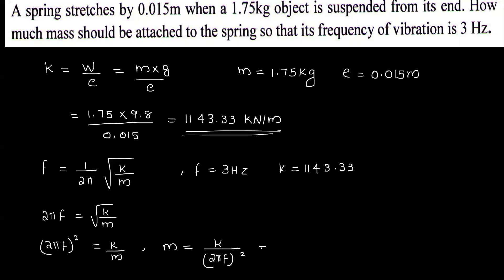That is equal to 1143.33 divided by 2 pi into 3, all squared. That will be equal to 3.217 kg.